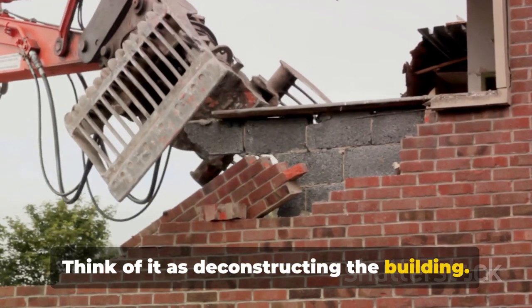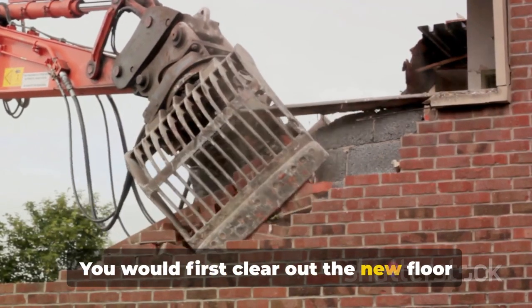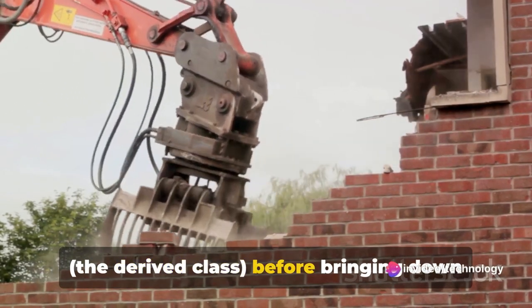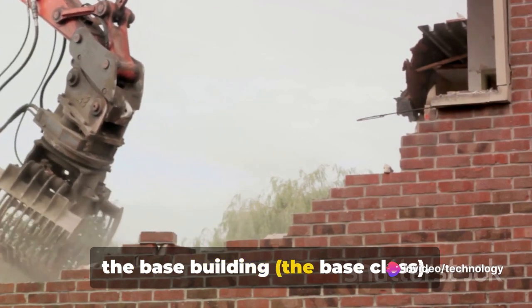In the case of derived classes, the derived class destructor is called first, followed by the base class destructor. Think of it as deconstructing the building. You would first clear out the new floor, the derived class, before bringing down the base building, the base class.